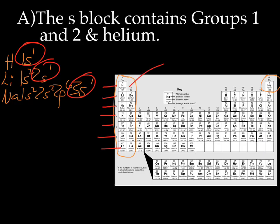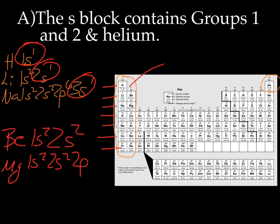If we now look at group 2, beryllium is 1s2, 2s2. Magnesium is 1s2, 2s2, 2p6, 3s2, and so forth. So all of group 2 ends in s2. And helium is a special case. He is 1s2, but he's over there with the noble gases. So we've got the S block.